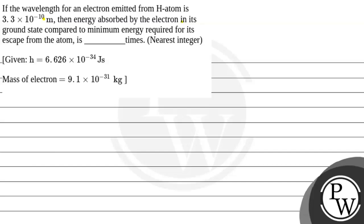Let's read this question. If the wavelength for an electron emitted from a hydrogen atom is 3.3 × 10⁻¹⁰ meter, then the energy absorbed by the electron in its ground state compared to the minimum energy required for its escape from the atom is how many times? We need to find the value to the nearest integer. We are given Planck's constant and the mass of the electron.